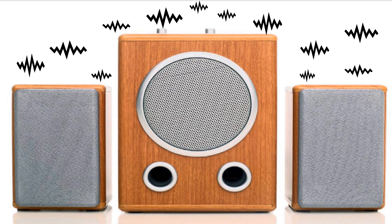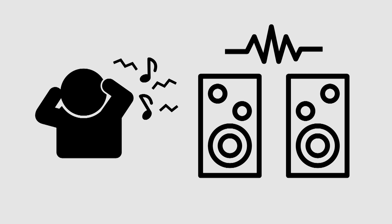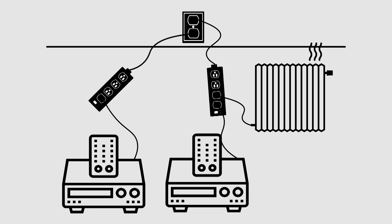When building an audio system, noise is a problem that troubles DIYers a lot. The noise amplified by the amplifier board greatly affects the listening experience, and can even become unbearable. This is also very common at home — when two CD players are connected to two different power strips, one of which also carries high-current appliances such as a heater, and both strips are plugged into the same wall outlet, you will hear a lot of noise when playing music.